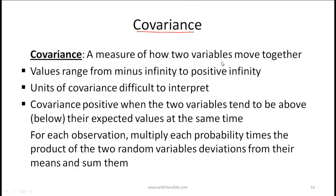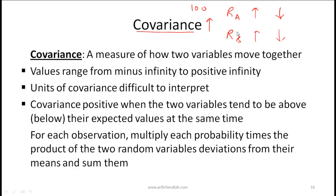Now let's talk about covariance. Covariance is a measure of how two variables move together. For example, if you look at the returns on stock A and stock B over 100 months, and whenever A's return is positive B's return is also positive — and vice versa — then the covariance is positive. If whenever A is up B is down, the covariance is negative.